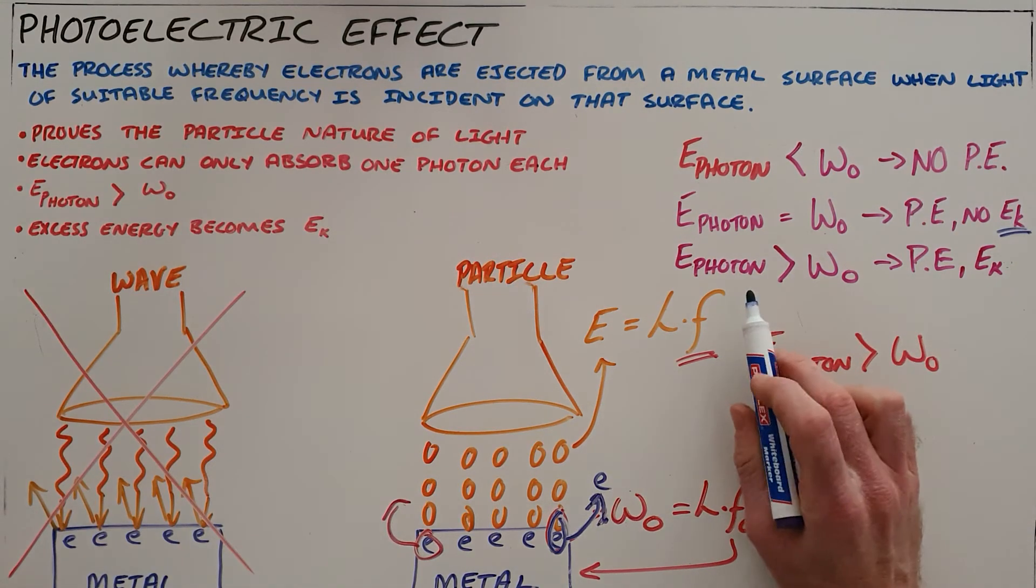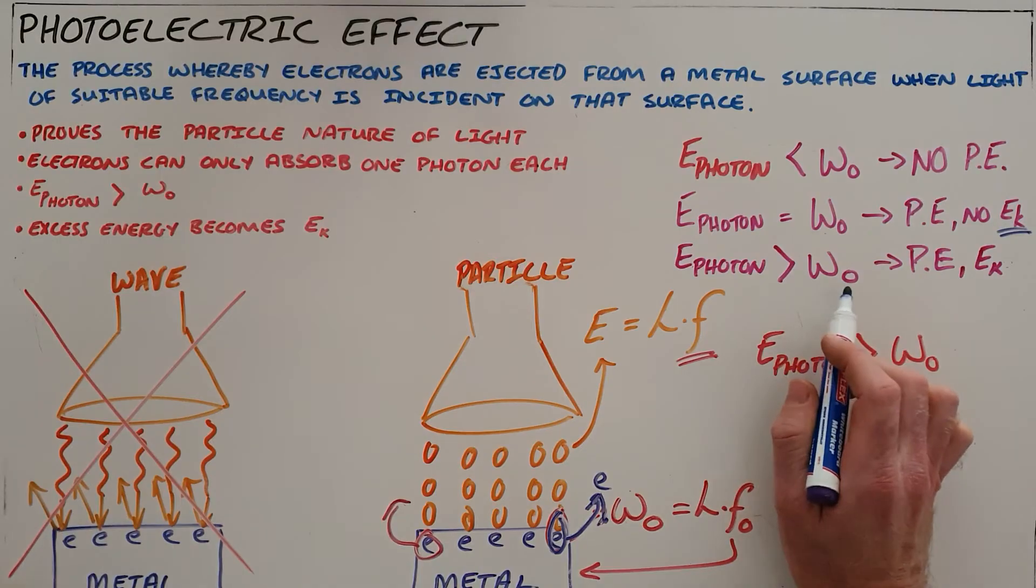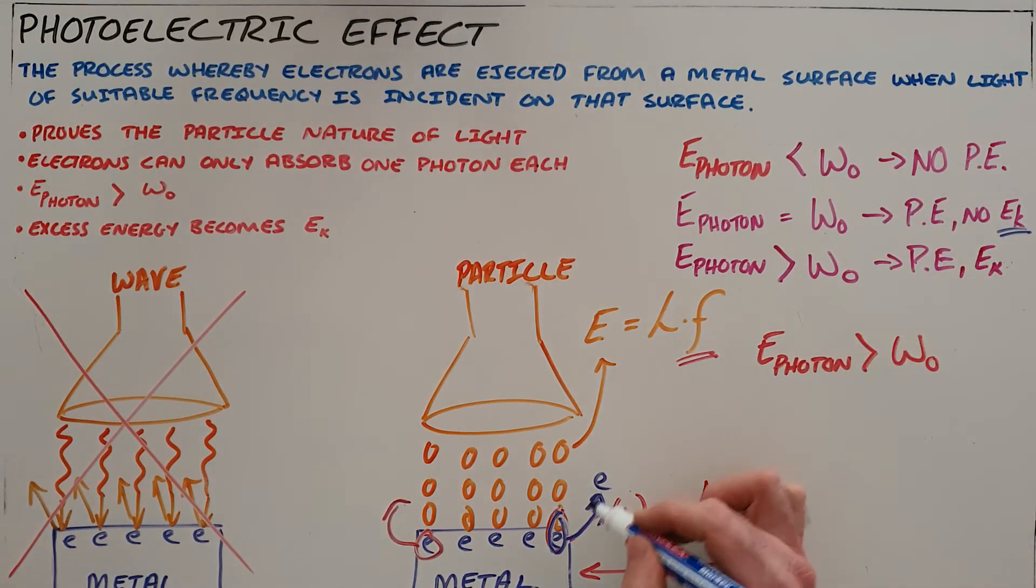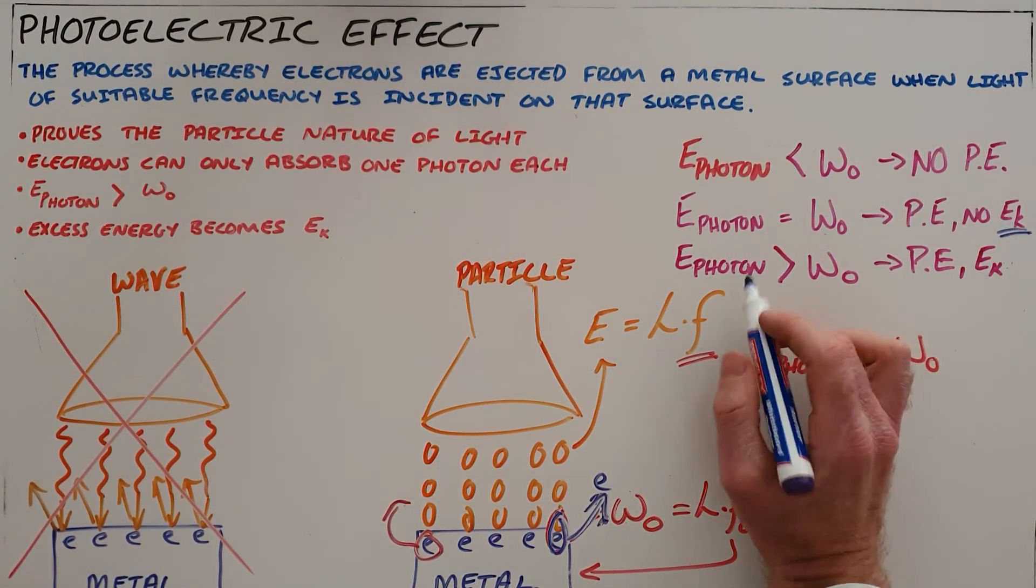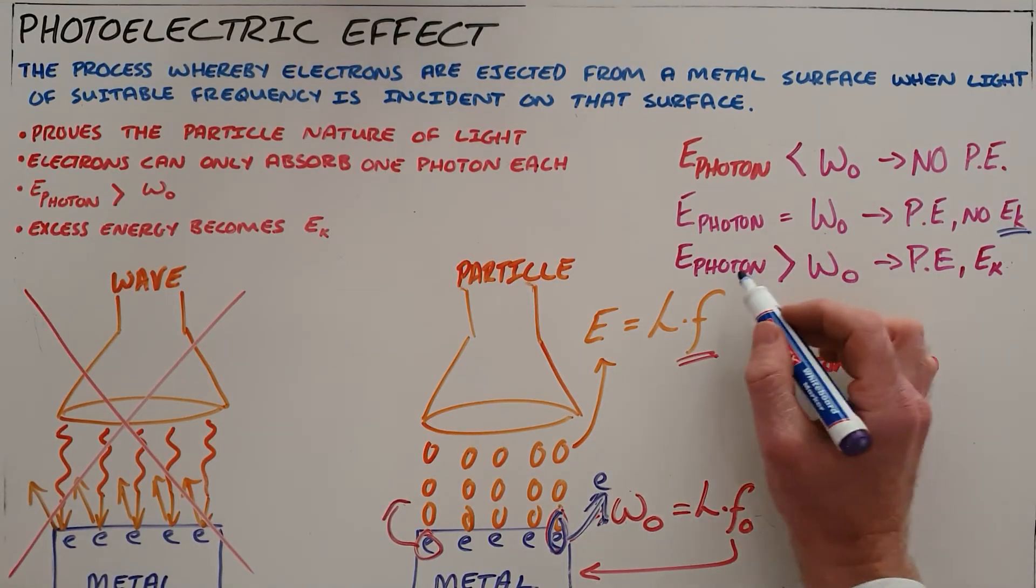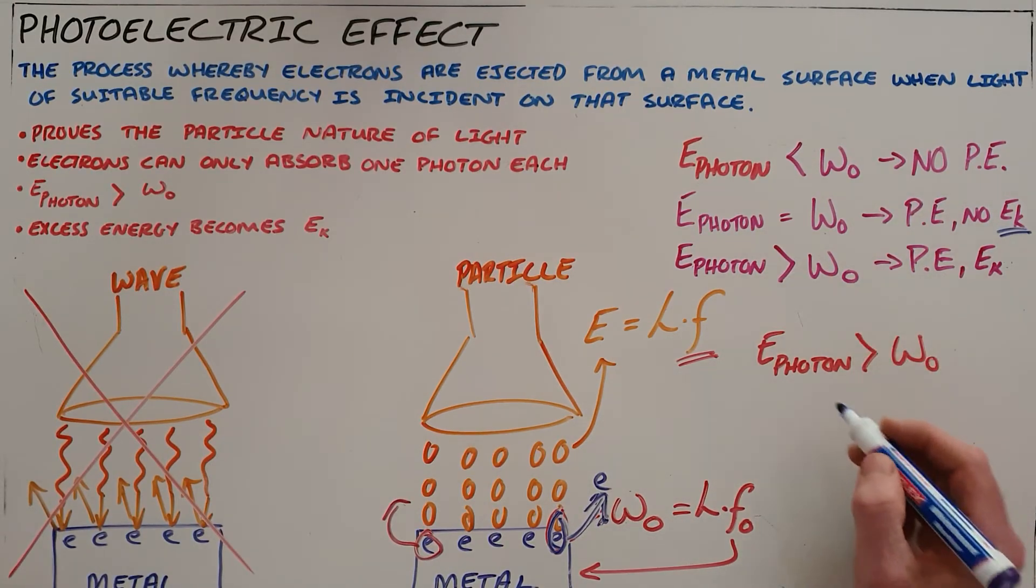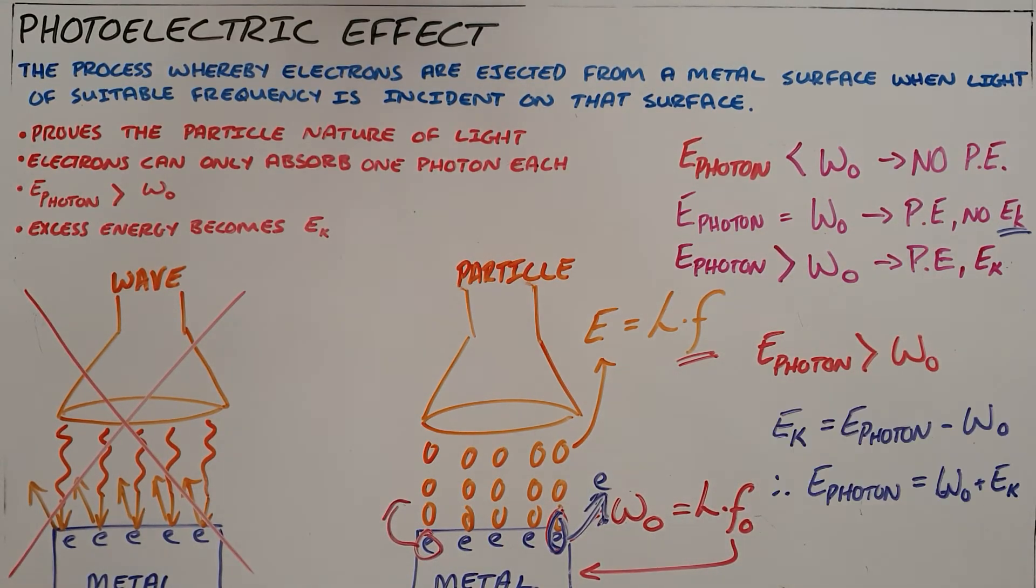And the third option is that the energy of the photon is now greater than the work function, which means that there would be a photoelectron that escapes, and then the excess energy, the difference between the energy of the photon and the work function, would then become the kinetic energy.